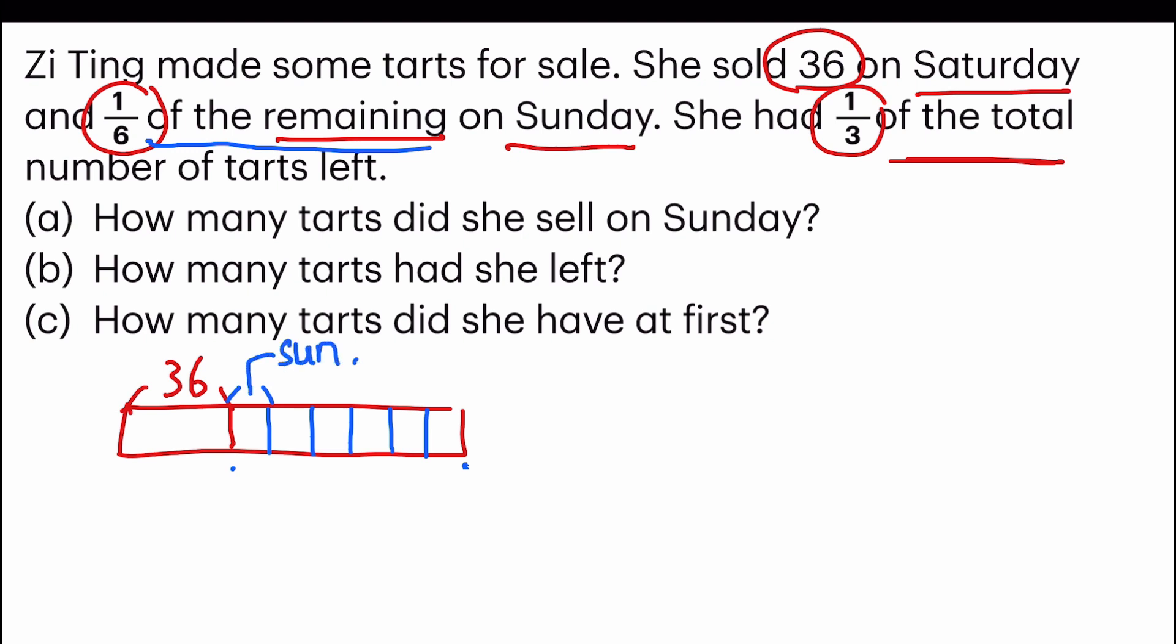And then she said she had one-third of the total number of tarts left. So which means from here all the way to the end is one-third of total. Now let us look at this one-third. How many units do we have? We have one, two, three, four, five units.